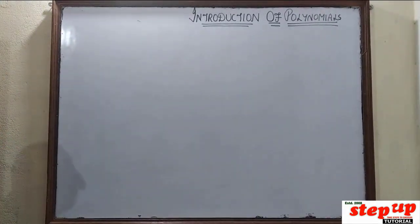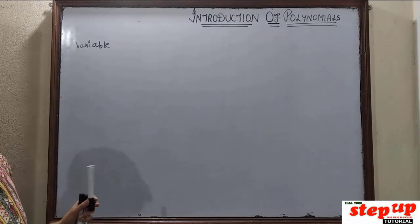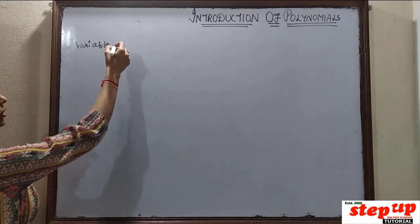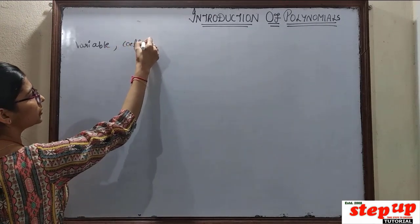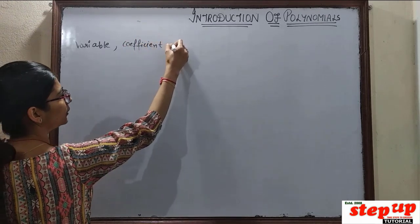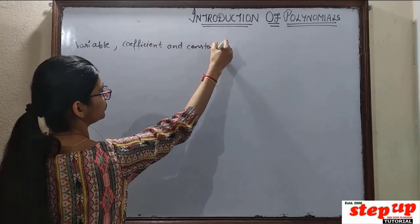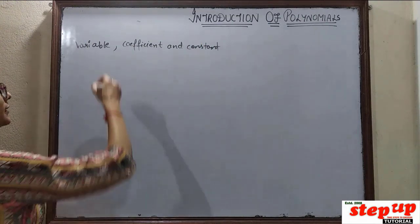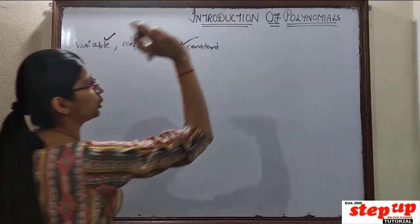First, we will learn about variables. What happens in variables? We will learn about three things: Variable, Coefficient, and Constant. Now, what are these three things? Because these three things are related to Polynomials.